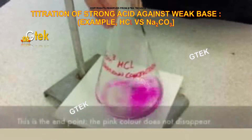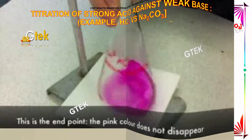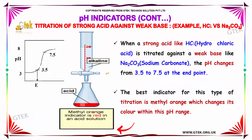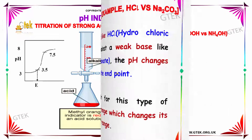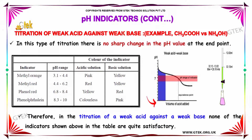For strong acid versus weak base titration, such as HCl against sodium carbonate, the pH range at the endpoint is from 3.5 to 7.5. The best indicator for this type of titration is methyl orange, which changes its color within this pH range.